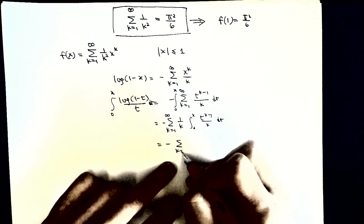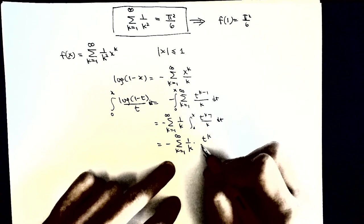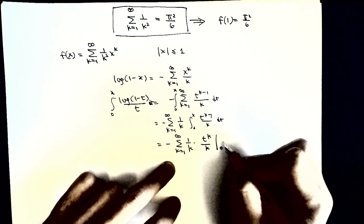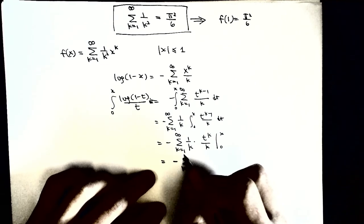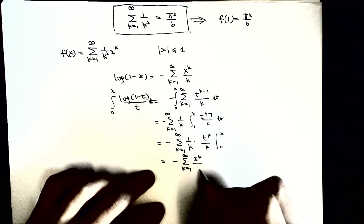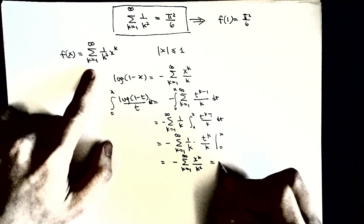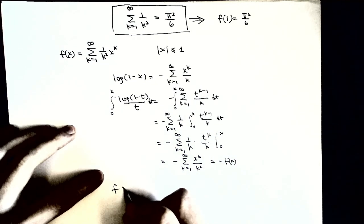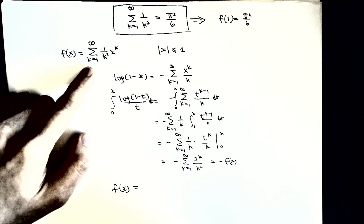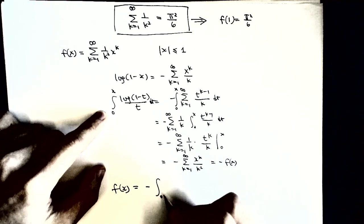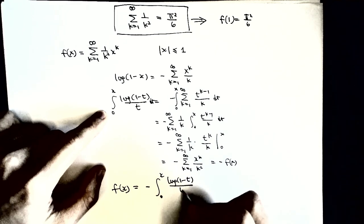After switching the sum and integral, this becomes the integral of t to the power k over k evaluated from 0 to x. After plugging in, we get x to the power of k over k squared, which is our original function, so this is minus f(x). We know that this infinite series has the integral representation: f(x) equals the integral from 0 to x of log(1 minus t) over t dt.